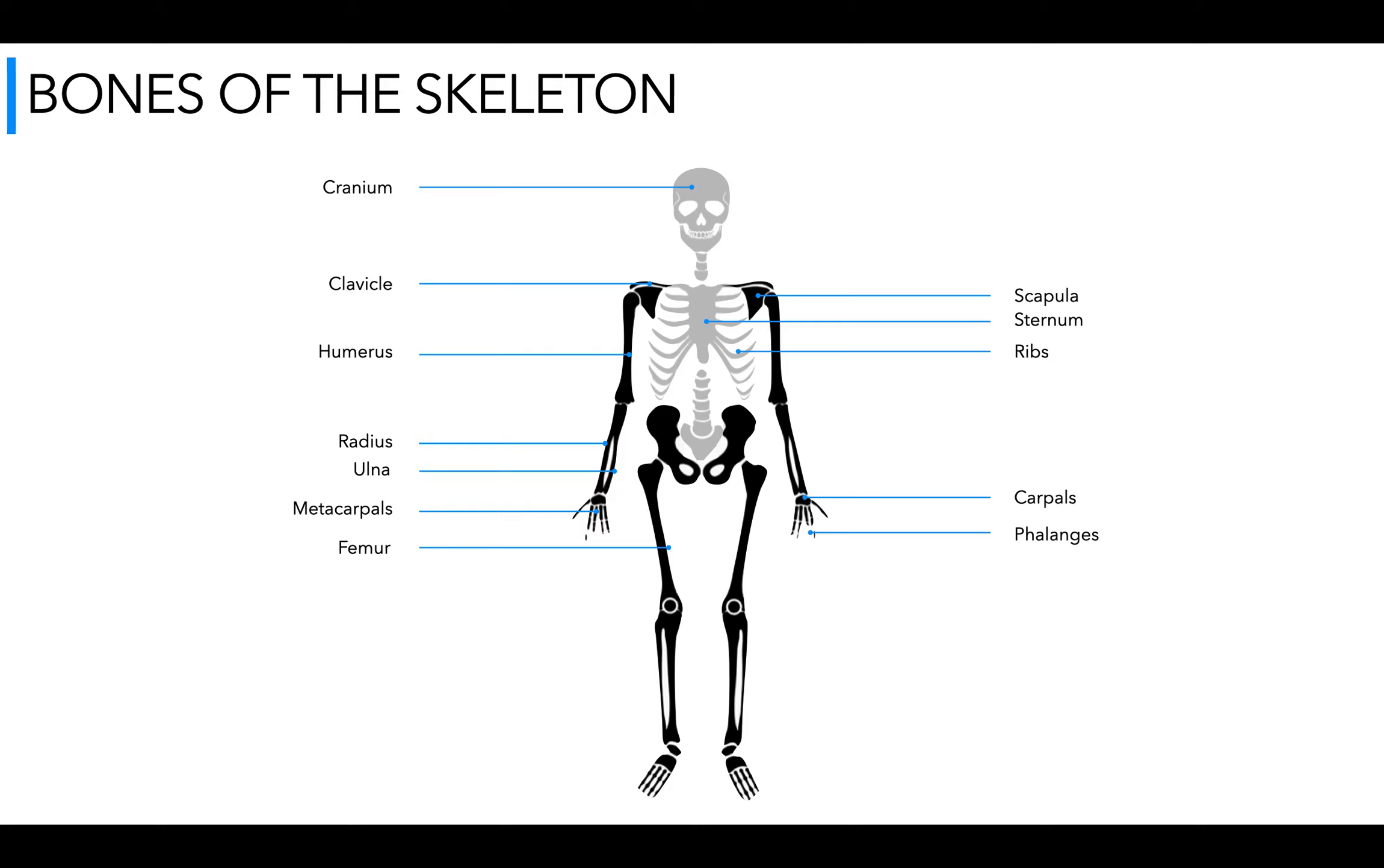The femur there, largest bone in the body in the upper leg. We have the patella, tibia and fibula. Quite easy to mix them up but it is tibia and fibula and tibia is the thick shin bone right at the front of our leg.